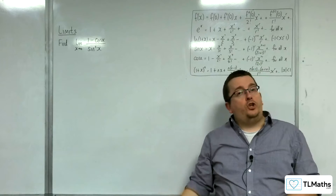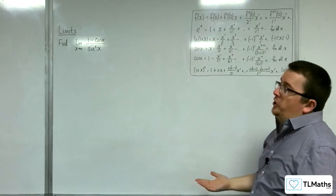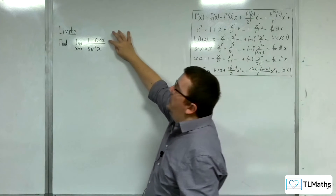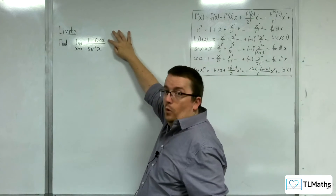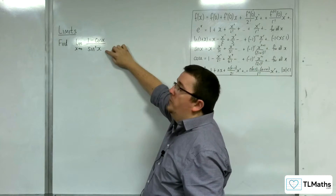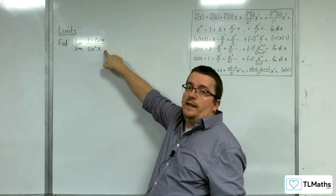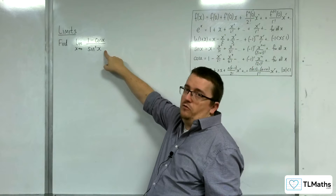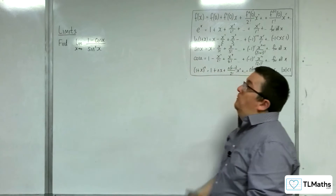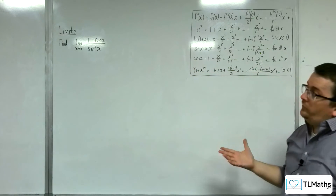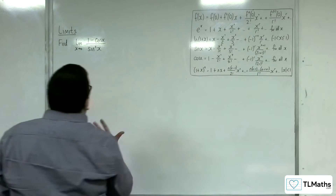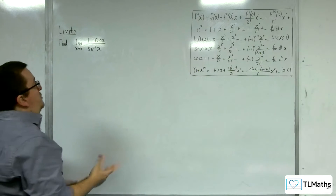The first check is that if I substitute x = 0 into the numerator, I get 1 minus 1, which is 0. And if I substitute x into the denominator, I get sine of 0, which is 0. So we have an indeterminate 0/0 form, so let's evaluate this using Maclaurin series.